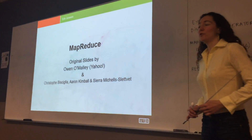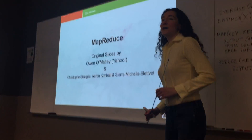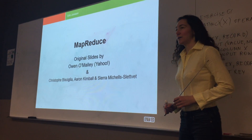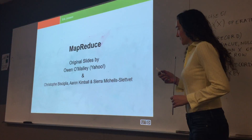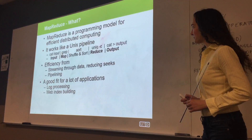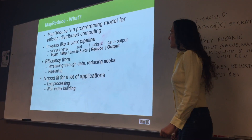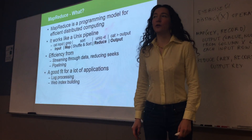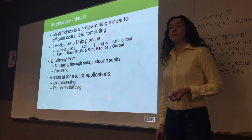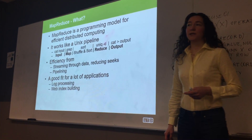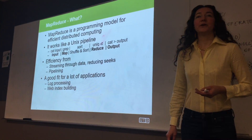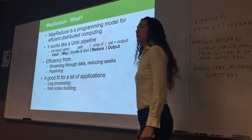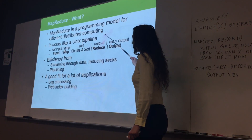We will continue with MapReduce. We had a brief overview last time, and now we will talk in more detail about MapReduce, and then we will see the Hadoop distributed file system. MapReduce is a programming model — we can implement anything in the Map function or in the Reduce function. We can place the code of our choice, and the reason we have this programming model is to more efficiently handle large amounts of data in a distributed environment.